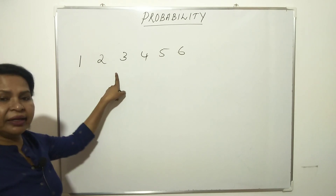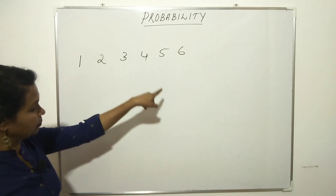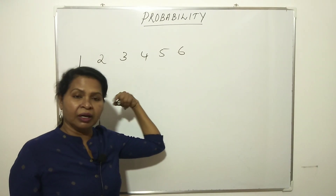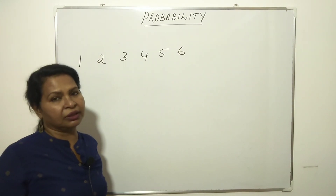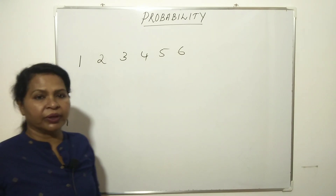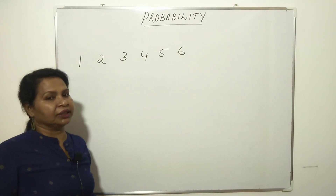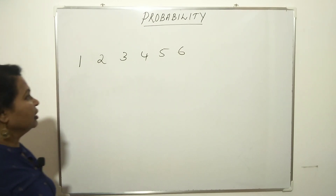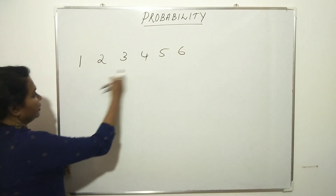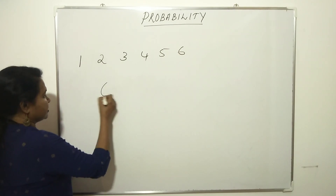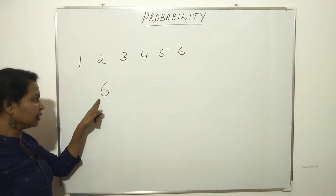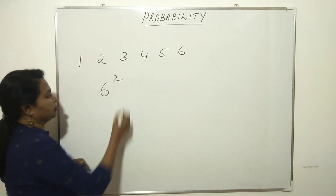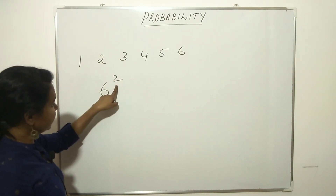If you roll one die, you already know the questions — getting a prime number, even number, and all those. If two dice are rolled, what are the possible outcomes? If one die gives 6 outcomes, two dice gives 6 squared, which equals 36 outcomes.